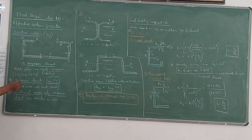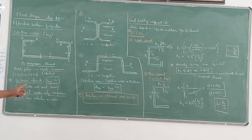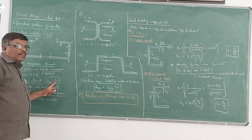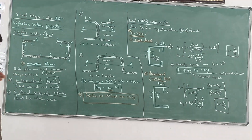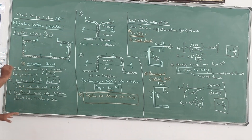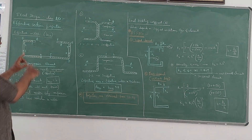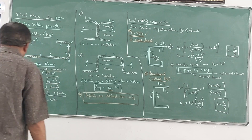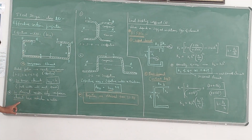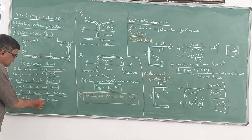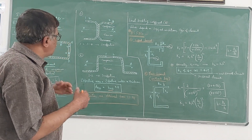In the case of a tension element, the entire width is taken as the effective width because the full width will resist the tension force. Whereas in the case of a compression element, the entire width will not be effective. In flexural members, only compression elements have a reduction in width, while tension elements take the full width.